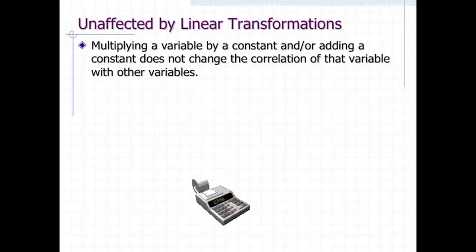A critical property of Pearson's R is that it is unaffected by linear transformations. This means that multiplying a variable by a constant and or adding a constant does not change the correlation of that variable with other variables.